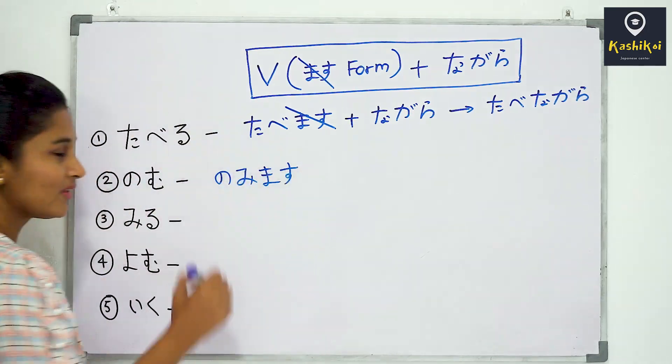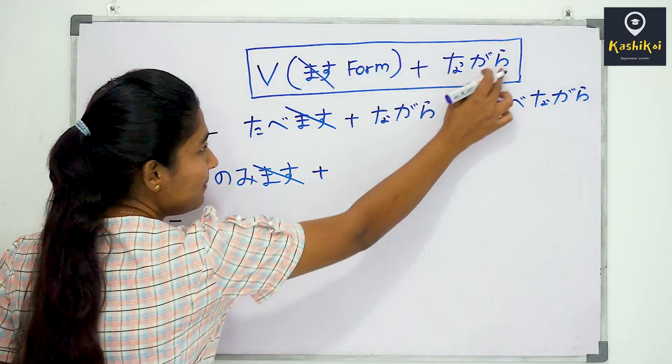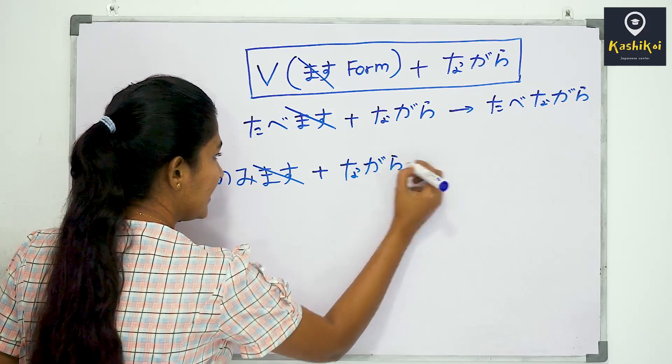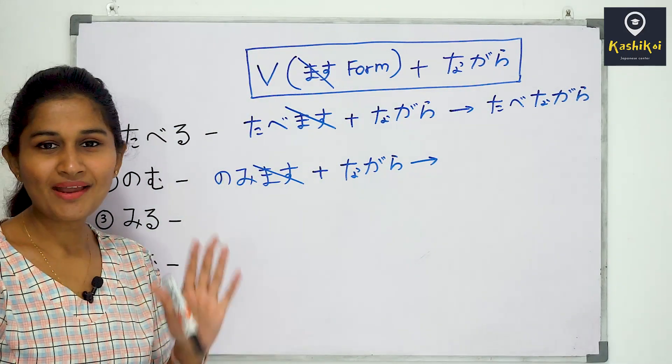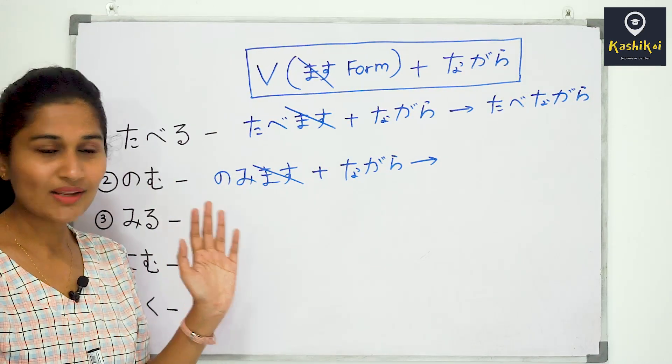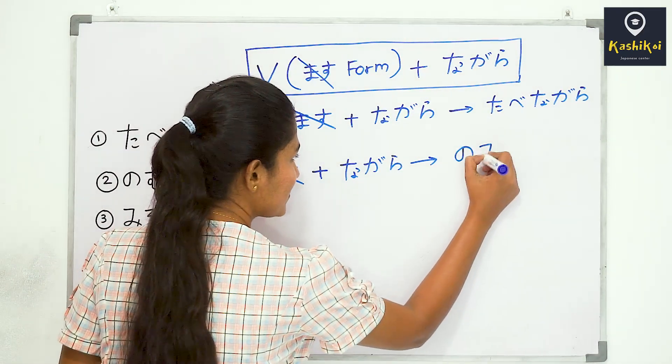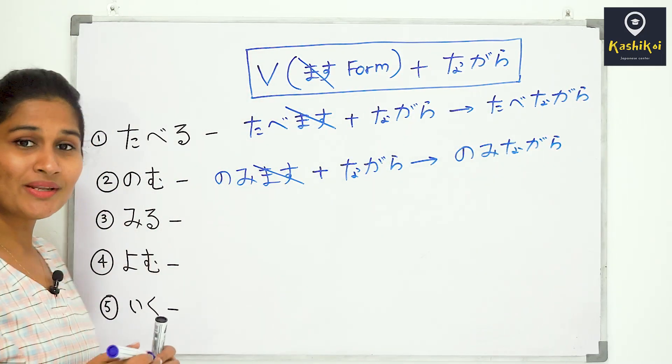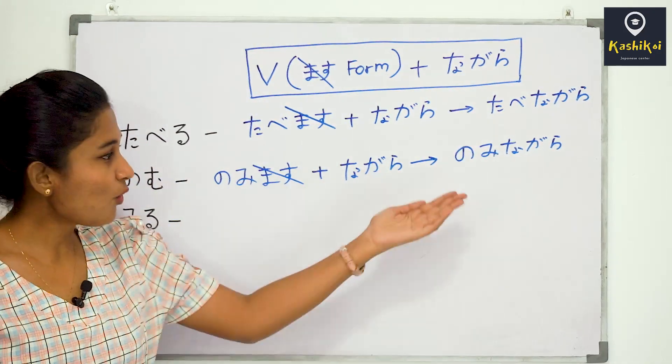Now let's talk about nagara pattern. Nagara means 'while doing something'. When you have a verb in masu form, you add nagara to show simultaneous actions. Nomi nagara means 'while drinking', for example.